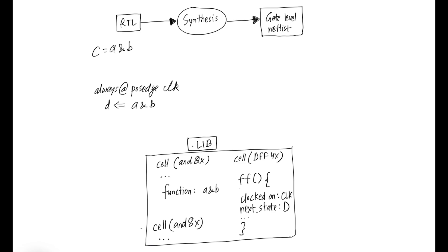Now let's discuss one of the frequently asked interview questions about synthesis. Let's say that in our RTL, we have a statement like this where A and B is assigned to C, then how does the synthesis tool know which cell from the .lib this expression should be mapped to?